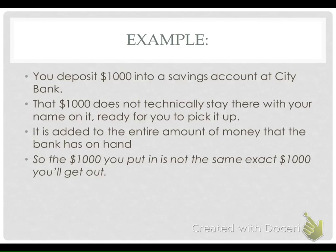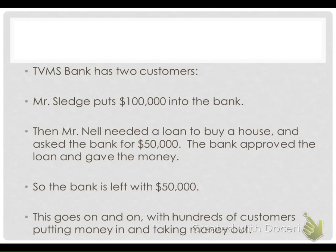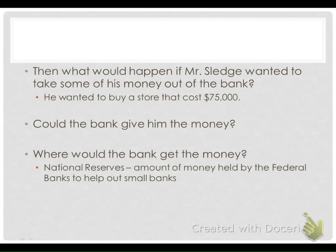Let's look at TVMS Bank. TVMS Bank has two customers, Mr. Sledge and Mr. Nell. Mr. Sledge puts in $100,000. Then Mr. Nell needed a loan to buy a house — he asked the bank for $50,000, and the bank approved the loan. So $50,000 got taken away from $100,000, leaving the bank with $50,000 left. What happens if Mr. Sledge wanted to take his money back? He wants to buy a store that costs $75,000, but the bank only has $50,000 — they can't give him all the money he wanted.